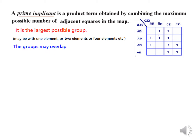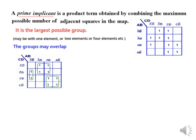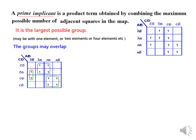Groups may overlap, so we have to find the maximum possible groups even if they overlap. Now let us see the easiest ones first: four, four, and two. But we have to see all possibilities.